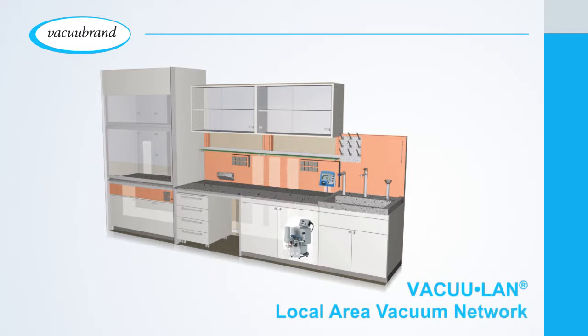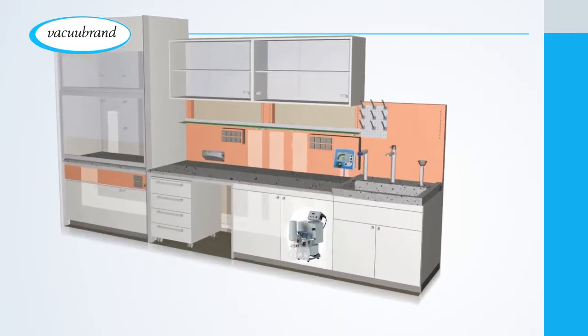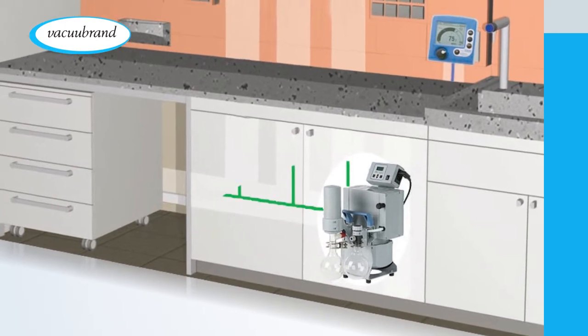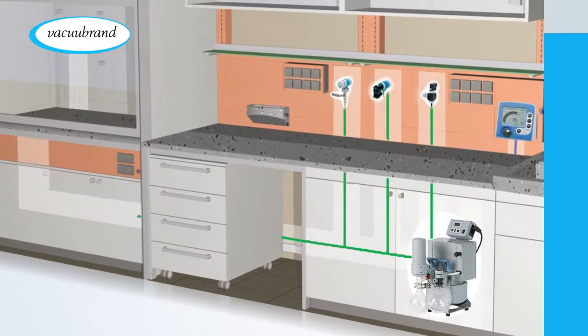The modern option is a VacuLand local vacuum network from VacuBrand. With a VacuLand network, a single quiet oil-free vacuum pump sits under your bench or fume hood and supplies vacuum to several workstations in the lab.